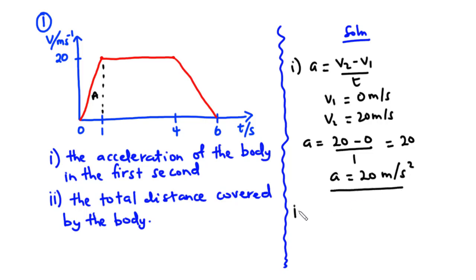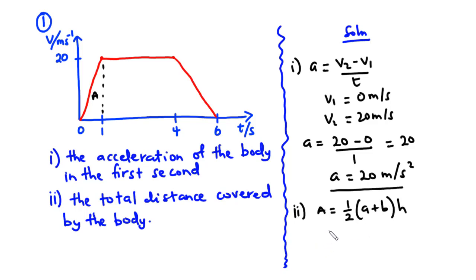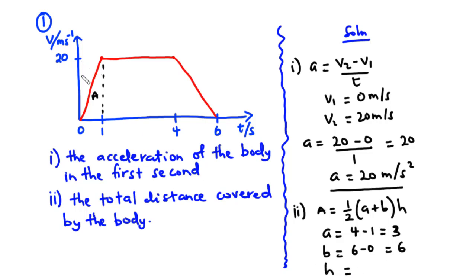Now let's find part ii — the total distance covered by the body. To find the total distance we need to find the area of this figure. This is a trapezium, so the area of a trapezium is equal to half times (a plus b) times h. Here, a is the side from 0.1 to 0.4, so a equals 4 minus 1 which is equal to 3. And b is the base from 0.0 to 0.6, so b equals 6 minus 0 which is equal to 6. The height h is from 0 to 20.